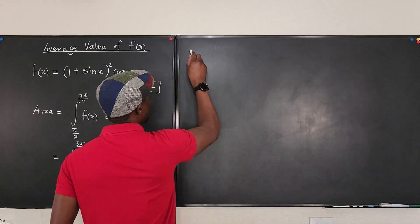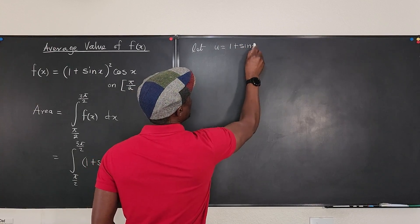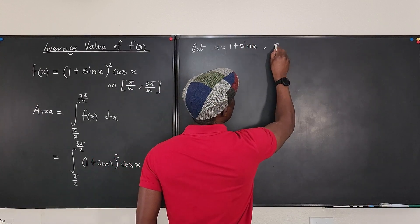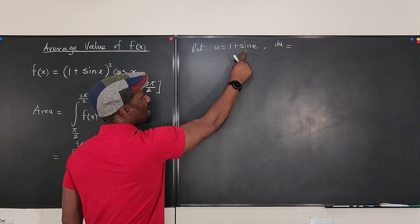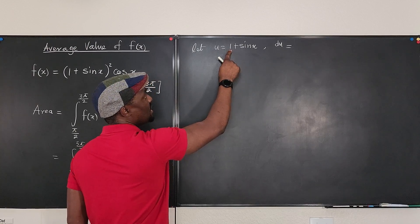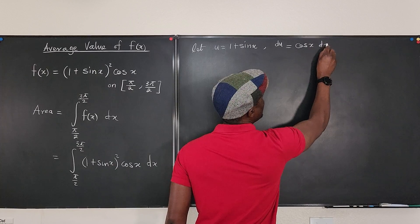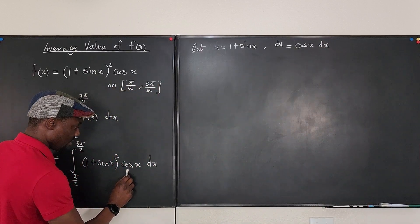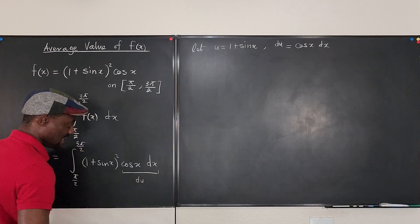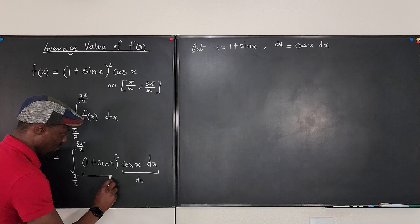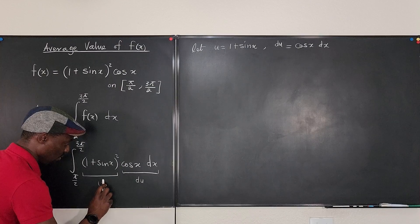So, we're going to say, let u be equal to 1 plus sine x, so that du will be equal to, if I differentiate both sides, this is going to be 0, and this will be cosine x dx, which is sitting right here. So, it means that this is the same thing as du, and what I have here, since u is 1 plus sine x, this is just u squared.